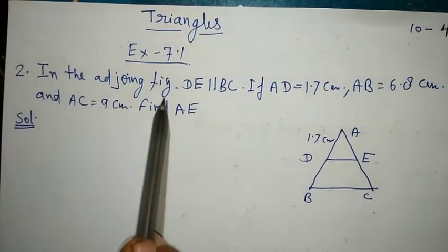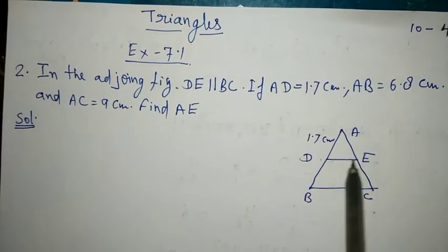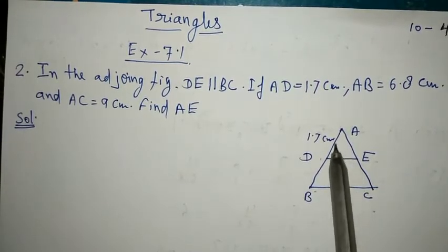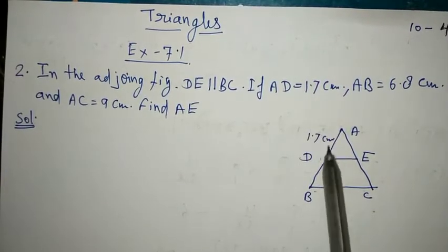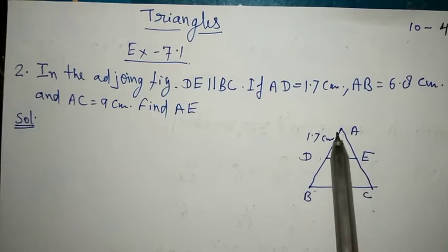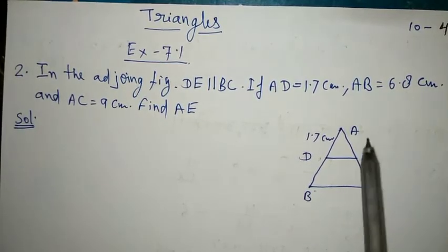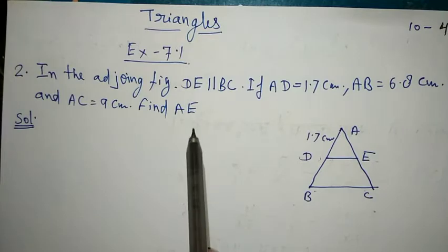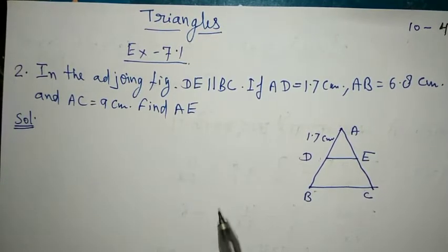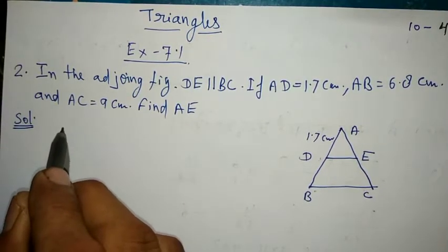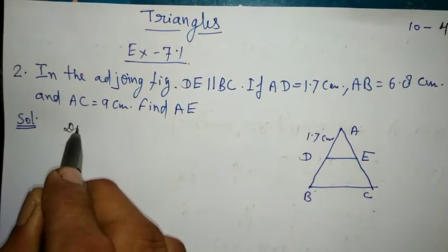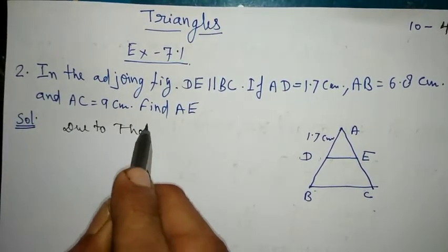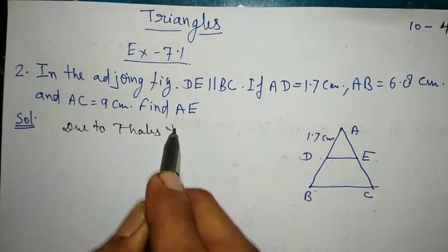In the given figure, DE is parallel to BC. If AD = 1.7 cm, AB = 6.8 cm, AC = 9 cm, find AE. Due to Thales' Theorem,